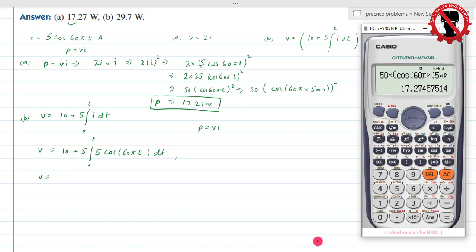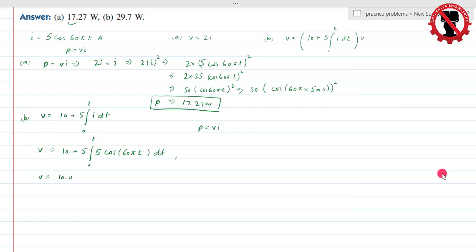I'll solve this V in calculator. First of all you have 10 plus 5 and then integration. Integration, now you have 5 cos of 60 pi and t value is 5 ms, so 5 exponential power minus 3. This will be my value from 0 to 5 ms. So voltage V is equal to 10.05 volts.